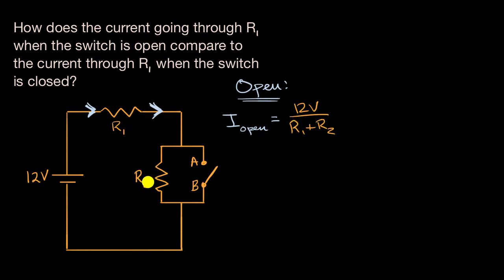And so this is just going to be R1 plus R2. If you have two resistors in series, their equivalent resistance is just the sum of the resistances. Fair enough.